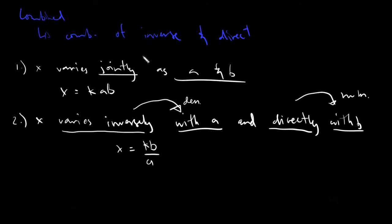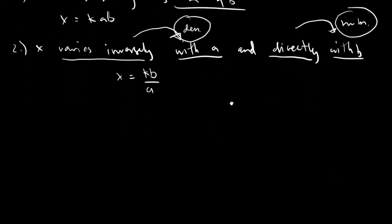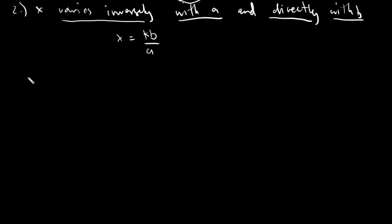Let's disregard the term 'jointly' for now — it's a little bit confusing. Everything after 'inversely' would be on the denominator and everything after 'directly' would be on the numerator. So let's go to translation. Translation will simply demand us to create our formula equation. Let's have our very first example.